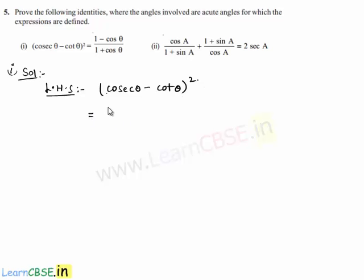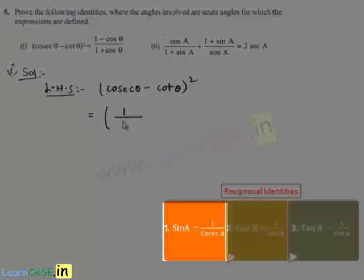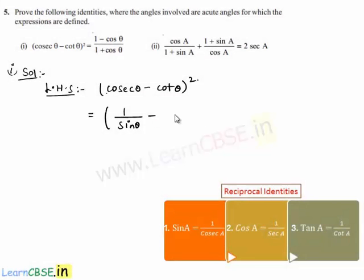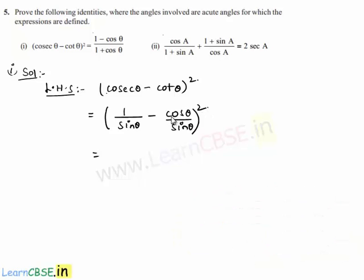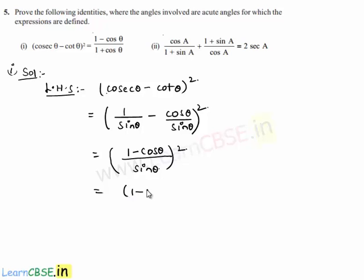Let us rewrite cosec θ as 1/sin θ and cot θ as cos θ/sin θ. The whole expression is then ((1 - cos θ)/sin θ)², which equals (1 - cos θ)² / sin²θ.